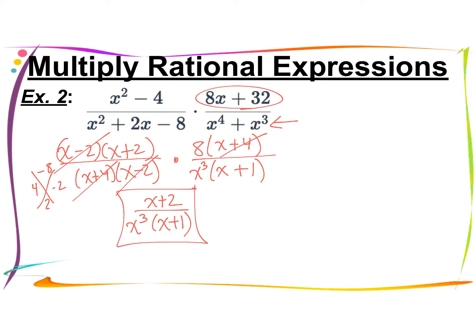Now I'll set the domain from the denominator factors, including x cubed. So x cannot be negative 4, positive 2, 0 (from x cubed), or negative 1.